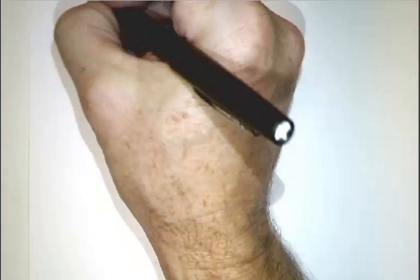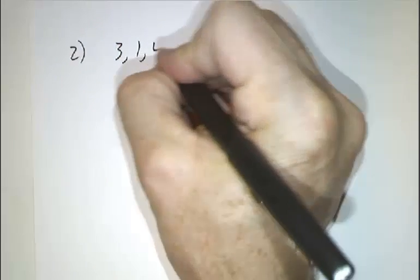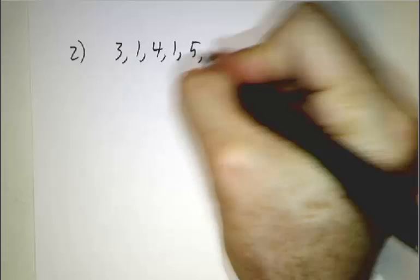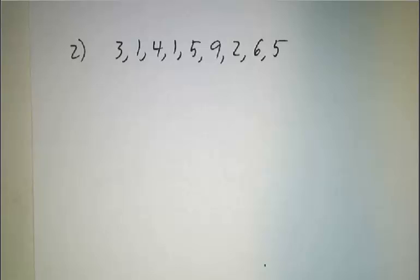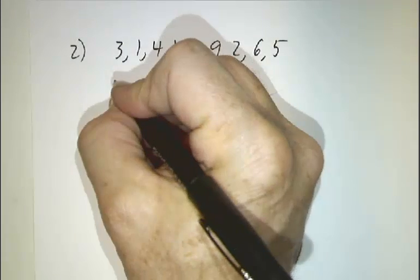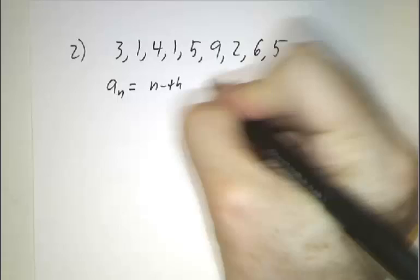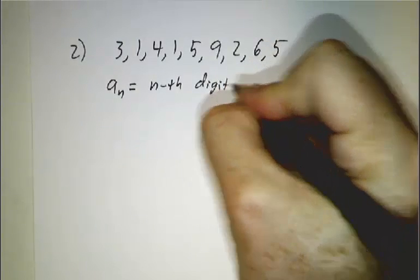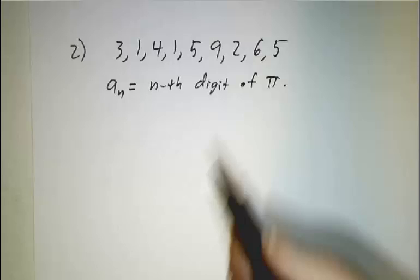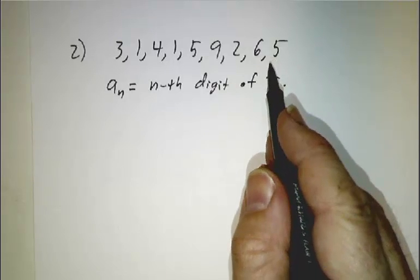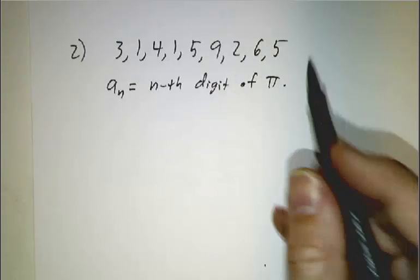Let's look at an example of something that doesn't converge. Let's take the sequence 3, 1, 4, 1, 5, 9, 2, 6, 5 — in other words, we let a_n be the nth digit of pi. It's a perfectly good sequence — a list of numbers going on and on forever — but it doesn't converge. It doesn't settle down to any one number; it winds up bouncing around.